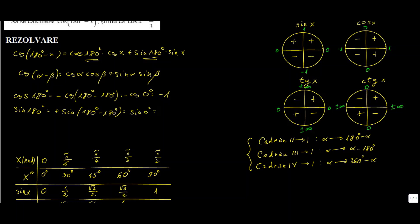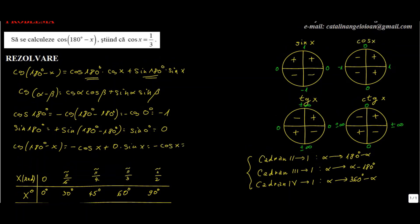Cât este însă sinus de 0 grade? Este 0. Prin urmare, formula noastră: cos de 180 de grade minus x egal cu cos de 180, care este minus 1, ori cosinus de x, deci este minus cos de x, plus sinus de 180, care este 0, ori sinus de x. 0 ori ceva este 0, deci este minus cos de x. Problema ne dă exact pe cos de x, adică 1 pe 3, și cu minusul din față, prin urmare, l-am aflat pe cos de 180 minus x.